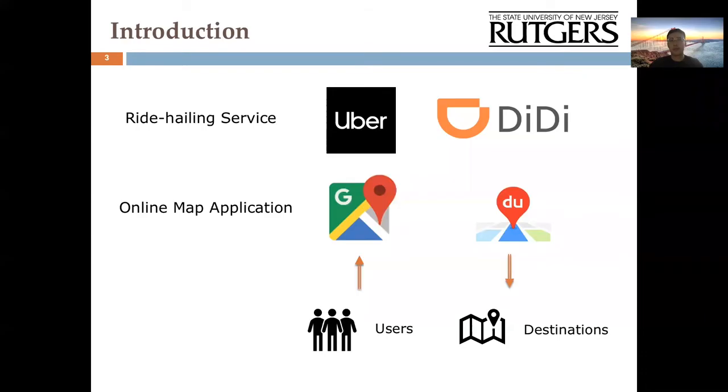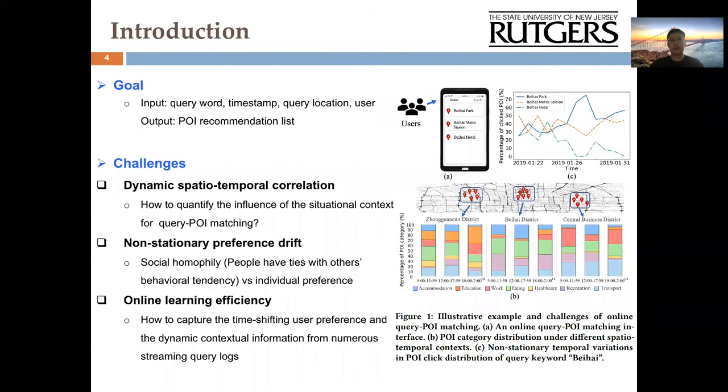In many location-based services, such as ride-hailing service and online map applications, they tend to provide an essential function to help users locate the desired destinations. In other words, trying to help users match a query with point of interest POIs for efficient destination retrieval. Therefore, our goal is to find out all possible POI candidates for recommendations based on query words, timestamp, query locations, and user information.